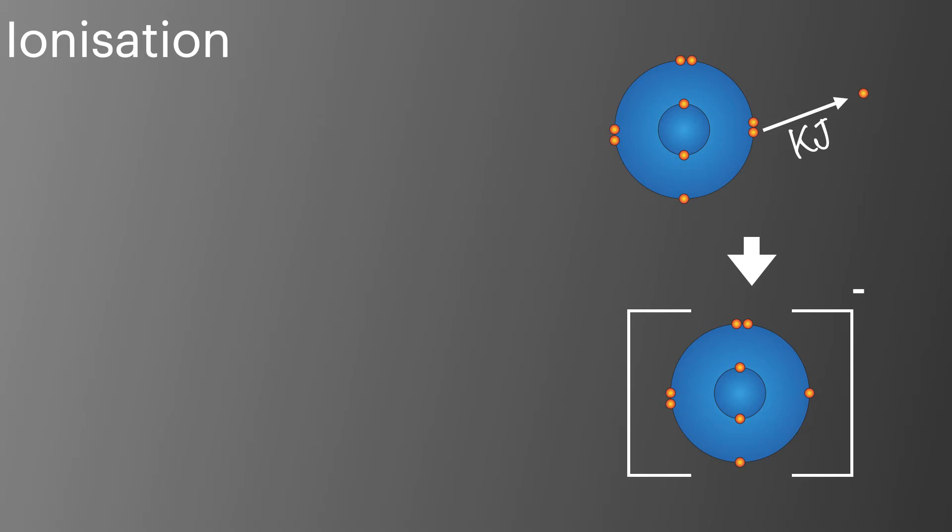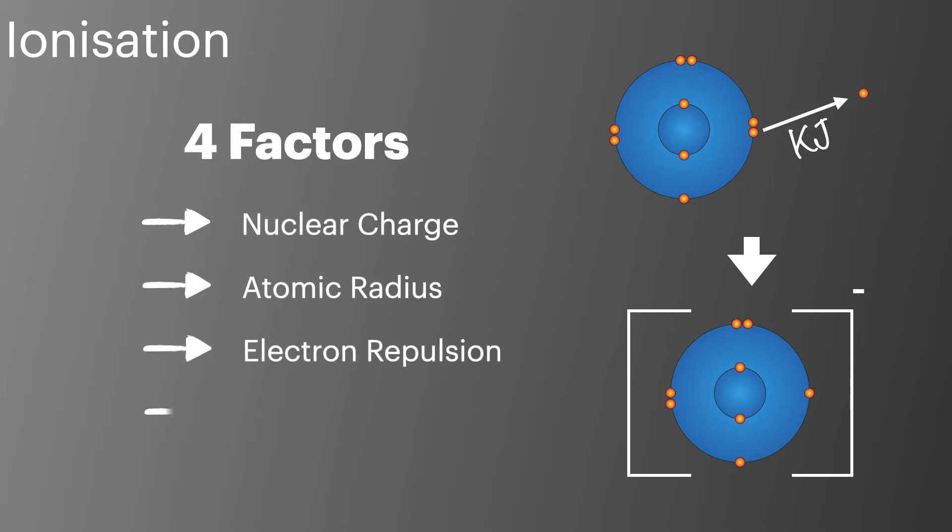The ionisation energy for each element is different and it's important that we understand what changes how much energy it takes to remove an electron from an atom. There are four main factors which change ionisation energy and these are nuclear charge, atomic radius, electron repulsion and electron shielding.